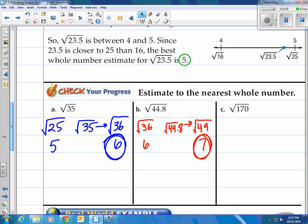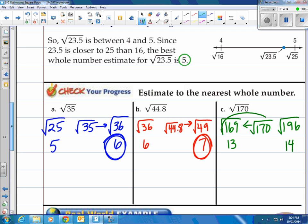And our last one here. Square root of 170. What's the one lowest or just below it? It's actually 169. Square root of 169 is 13. And then right above 170 is 196. Square root of 196 is 14. Now which is it closest to? Obviously it's closest to 169. So 13 would be a good estimate for the square root of 170.